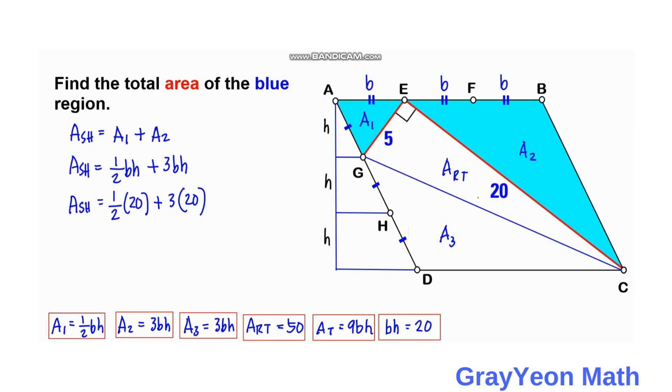So we can cancel this. So this becomes 10. And this becomes 60. So the area of the shaded region is equal to 60 plus 10 gives us 70 square units.